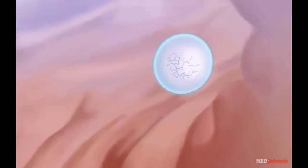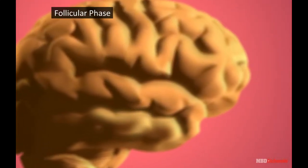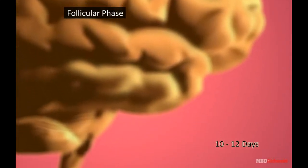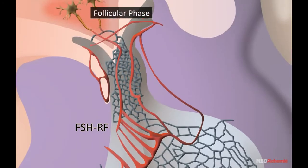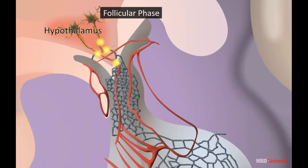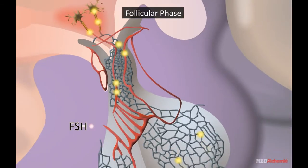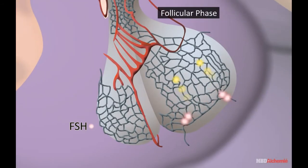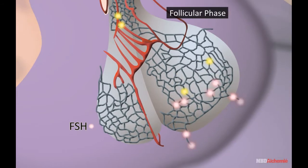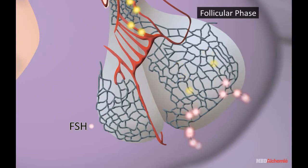Let's understand the various phases of the menstrual cycle. Follicular Phase: It follows the menstrual phase and lasts for about 10 to 12 days. Under the stimulation of FSH-RF of the hypothalamus, there is increased secretion of FSH from the anterior pituitary. FSH stimulates the change of a primary follicle of the ovary into a Graafian follicle. Follicular cells of the Graafian follicle secrete estrogens.